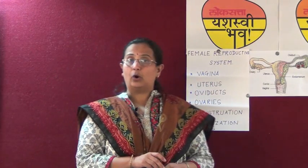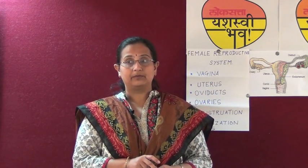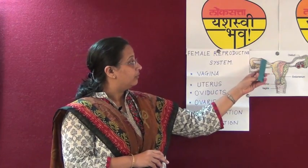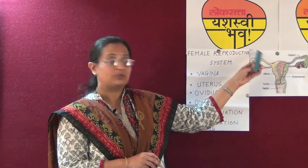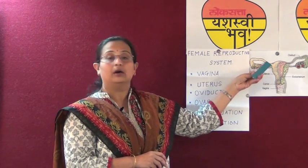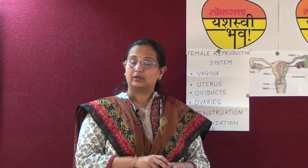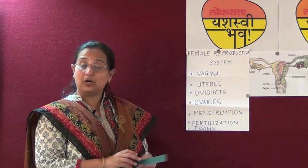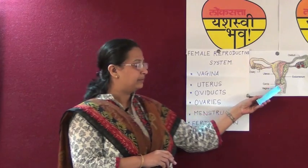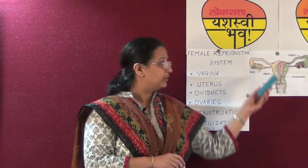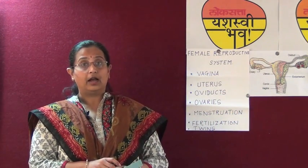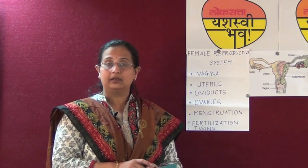The egg formed by the ovaries is released and brought to the uterus by the fallopian tubes. When the sperms enter inside through the vagina and encounter the egg, fertilization takes place.